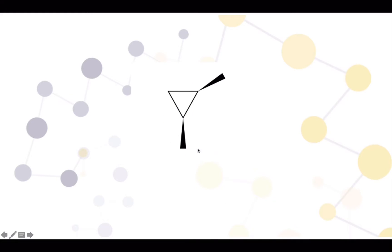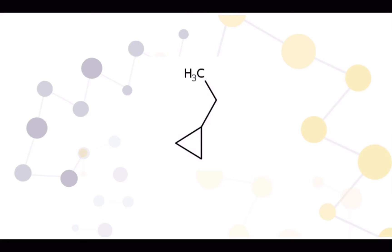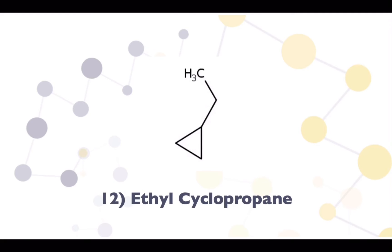Then there is a similar one to the previous, but different because the atoms are placed on the same side, so we name it cis-1,2-dimethylcyclopropane. And this one is a three-membered ring with an ethyl group that connects to it, so we name it ethylcyclopropane.